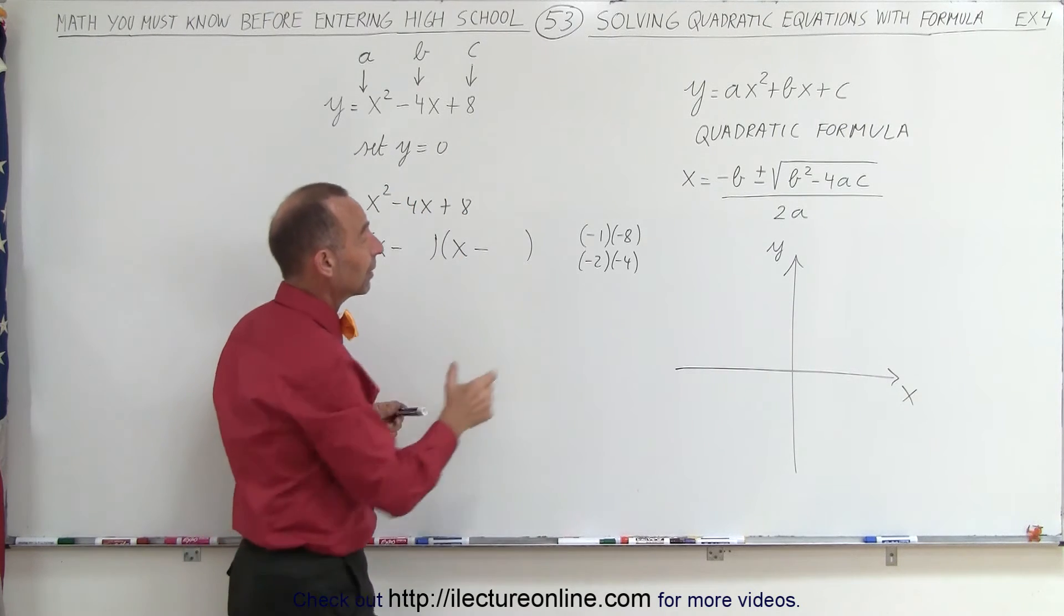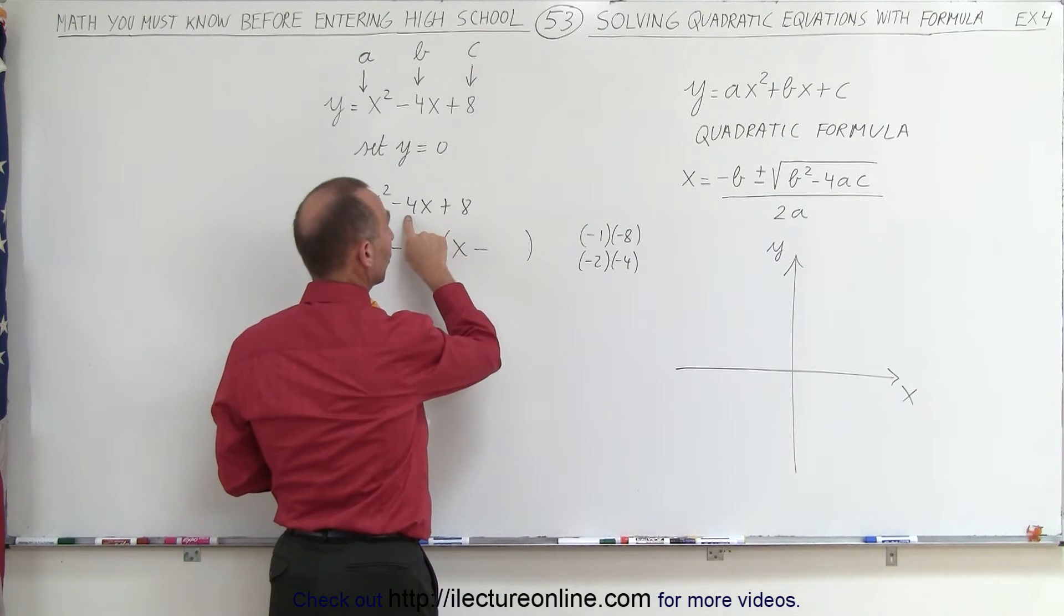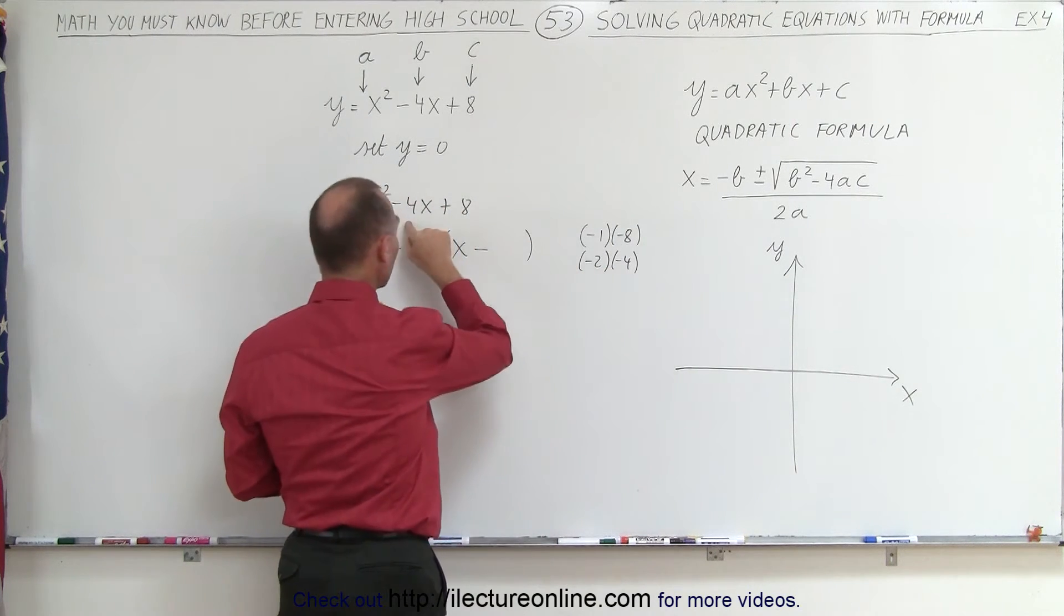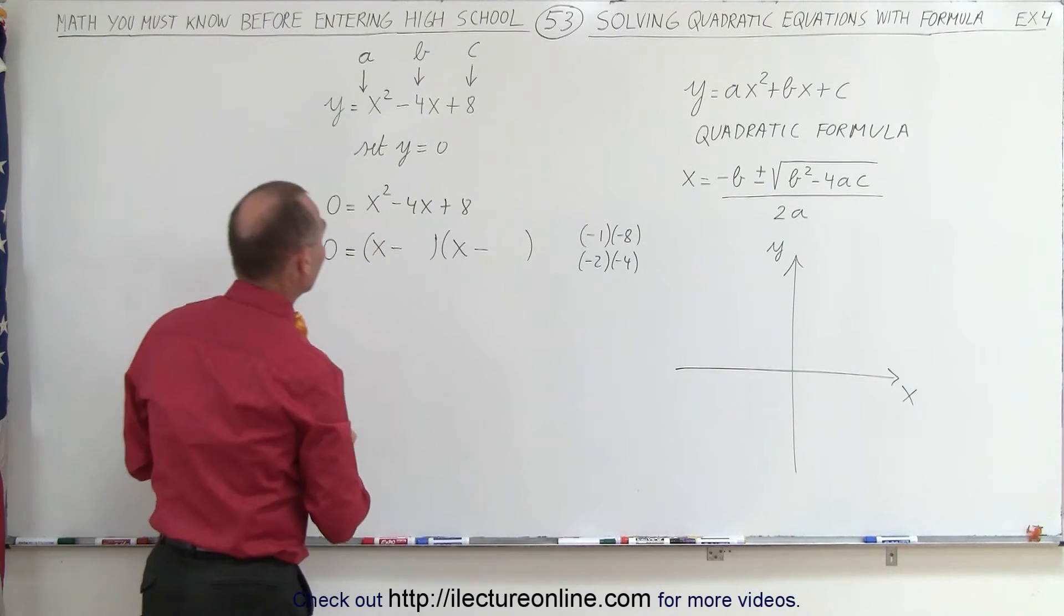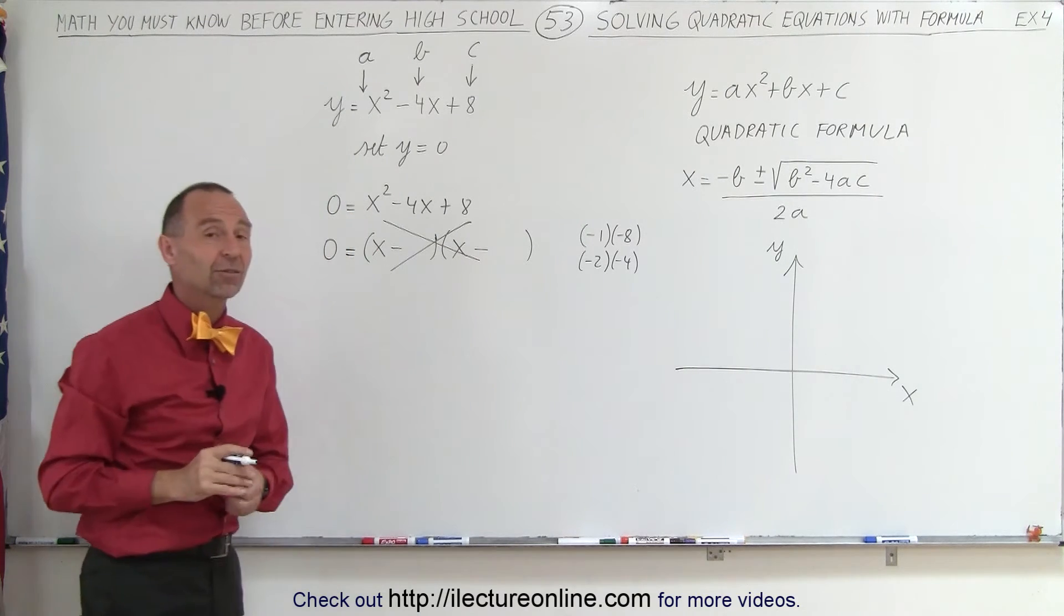But notice, when I add them together, negative 1 plus negative 8 is negative 9. That's not a negative 4. And negative 2 plus negative 4 gives me negative 6, which is also not negative 4. So it looks like I cannot factor this. This is not the correct method to do it. It's not possible.